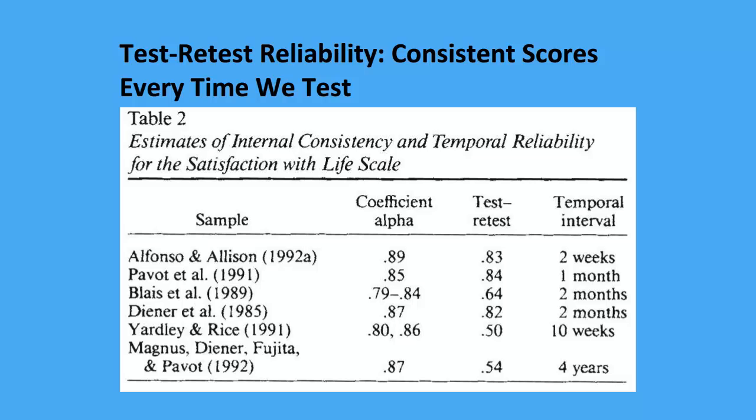Looking at this table, we have different samples from different articles — for example, Alfonso and Alice (1992). The coefficient alpha column shows internal consistency: how well are the items hanging together? Then we have test-retest and the temporal interval. For one study you come in today and return in two weeks; for another study the interval is one month. This shows how well two scores from the same test line up over time. This is how reliability should be reported in published articles — sometimes in a table, sometimes in text.